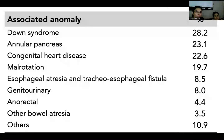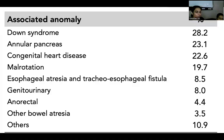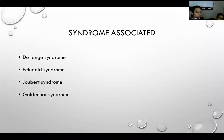The associated anomalies with their incidence percentages include Down syndrome, annular pancreas, congenital heart disease, malrotation, esophageal and tracheoesophageal fistulas, and others. Among these, association of esophageal atresia and TEF is mostly associated with the severity, morbidity, and mortality of duodenal atresia.